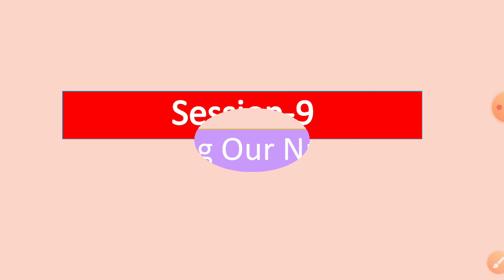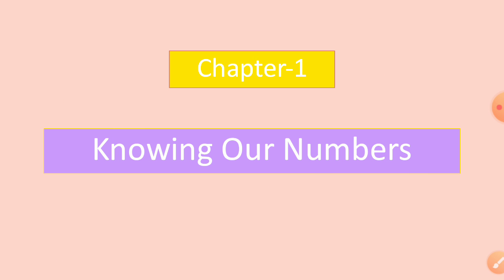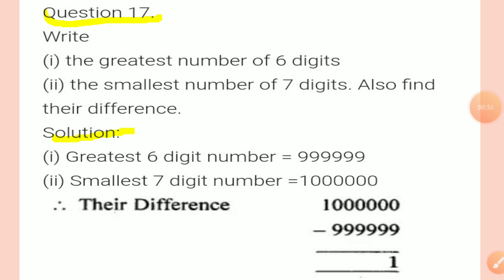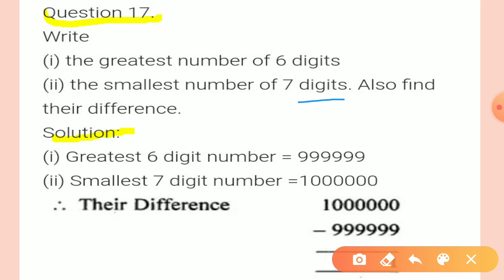Session 9, Chapter 1: Knowing Our Numbers. Students, in the last video we solved questions 1 to 16 of Exercise 1.2. In this video we will solve the rest of the questions. Let's start. Question 17: Write the greatest number of six digits and the smallest number of seven digits, and also find their difference.